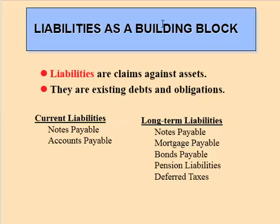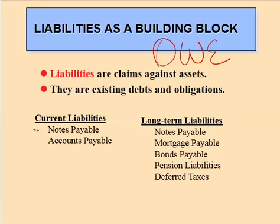Liabilities are things that we owe — claims against our assets, outstanding debts and obligations. We have notes payable, similar to notes receivable. A payable is a liability; we have to pay someone else, and that's an obligation. A note has interest and a due date attached and is in writing. Accounts payable is a little less formal — for example, we go to Staples and buy some merchandise, they send us a bill, and that's an accounts payable.